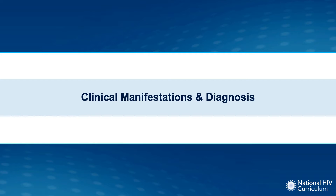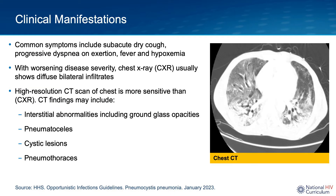The clinical manifestations of pneumocystis pneumonia include a subacute dry cough, progressive dyspnea on exertion, fever, and hypoxemia. With more severe disease, you can see radiographic abnormalities on a chest x-ray, which would typically show as diffuse bilateral infiltrates. For better visualization, a high-resolution CT scan of the chest would be your imaging modality, as shown in the figure on the slide.